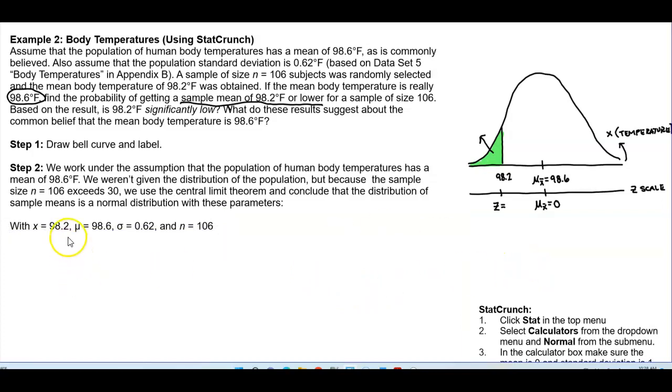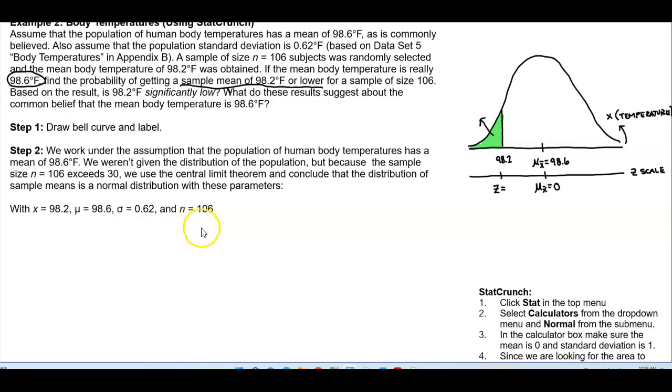So with X equal 98.2, we know that mu, which is the mean, is 98.6. We have our standard deviation of 0.62 and n is equal to 106.